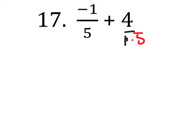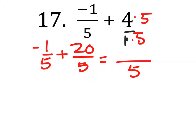So if we wanted a common denominator of 5, we'd multiply these by 5. You'd have a negative 1 fifth plus 20 fifths, which would give us a denominator of fifths. Then you'd have negative 1 plus 20,